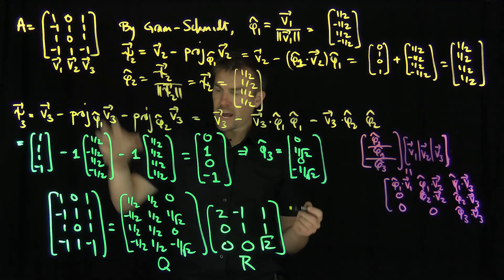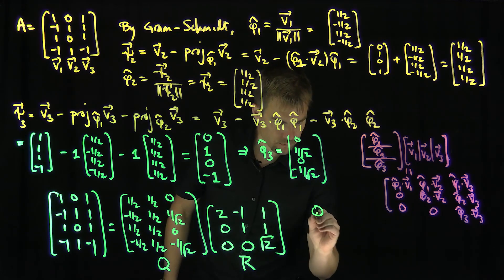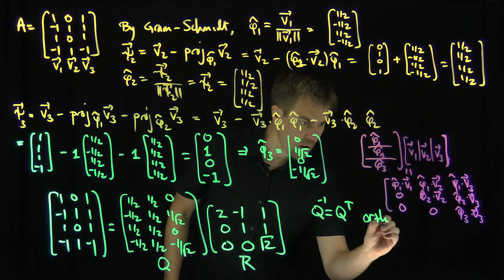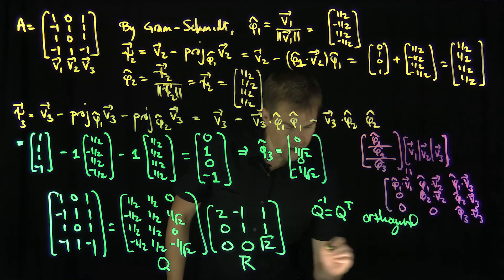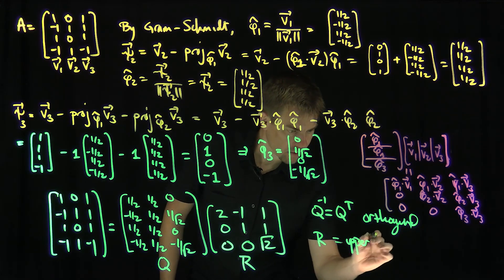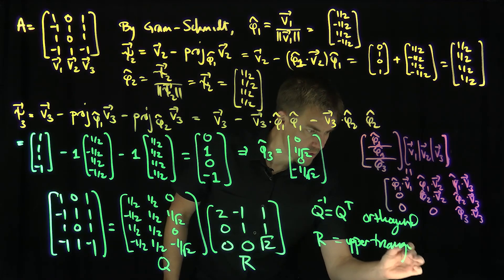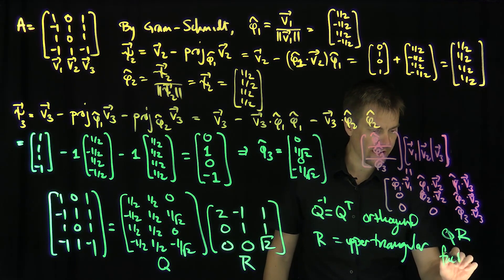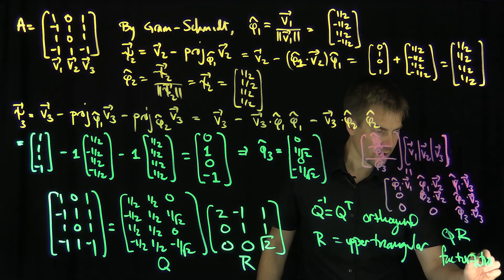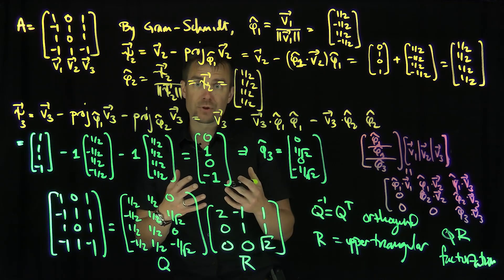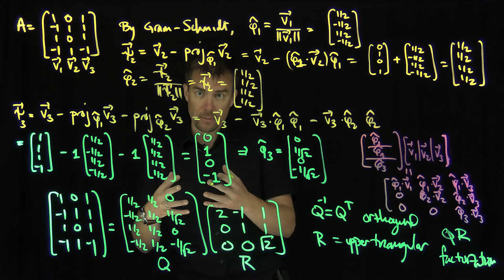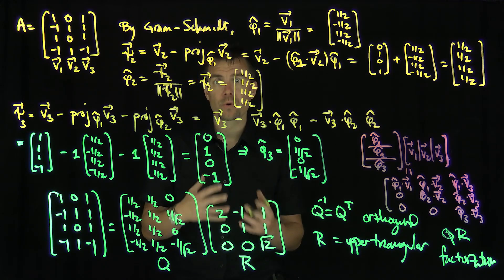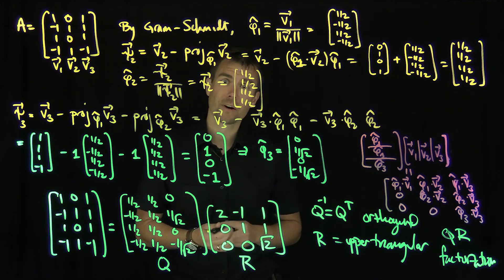So we've just factored matrix A into an orthogonal matrix Q — where Q inverse equals Q transpose — times an upper triangular matrix R. QR factorization is a fancy way of storing the information from the Gram-Schmidt procedure into a matrix form, and we'll see in further videos that this factorization is very useful for projections and solving the least squares problem. Thank you very much.